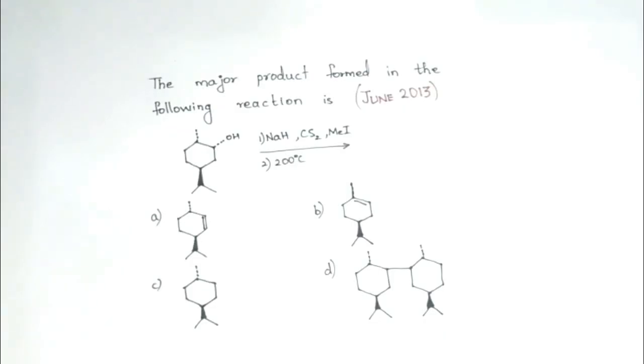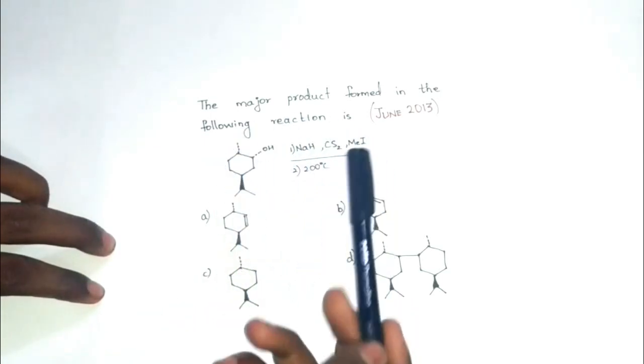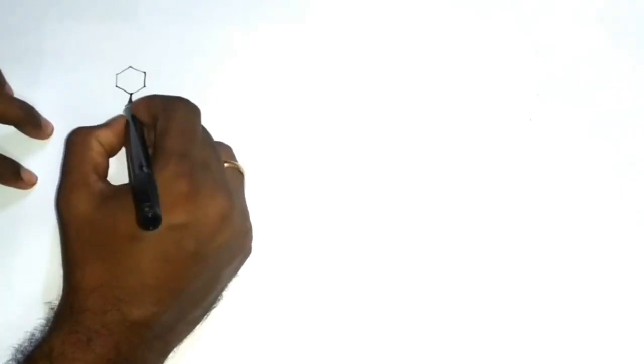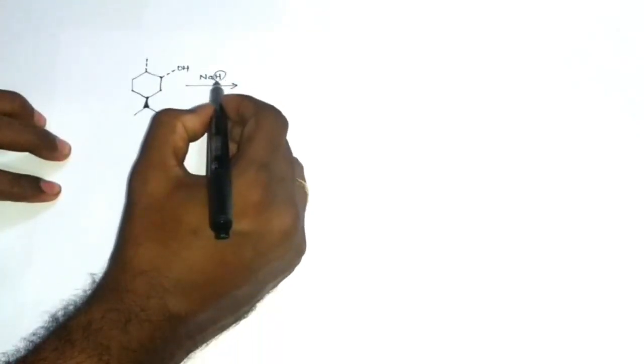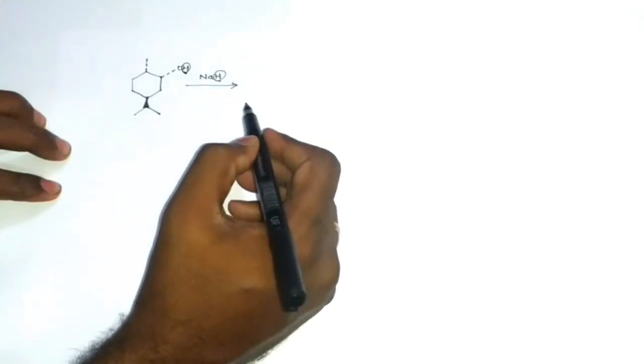Hey guys, in this video we will solve a question from CSIR NET June 2013. The major product formed in the following reaction is: the hydride from here will abstract the hydrogen from here, leading to the formation of...